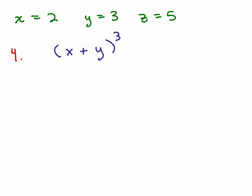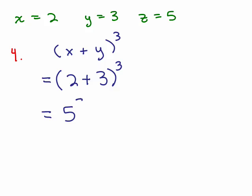Let's begin by plugging in the correct values for x and y. Since x is 2, we're going to put a 2 plus, and y is 3. Now we're going to do order of operations. Order of operations says do inside parentheses first, so that's 2 plus 3, which is 5. You can keep that in parentheses, but it's unnecessary at this point, and we have 5 cubed. 5 cubed is 5 times 5 times 5, and so the answer is 125.